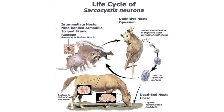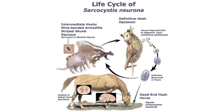The intermediate hosts are the nine-banded armadillos, striped skunks, raccoons, etc., which carry sarcocysts in skeletal muscle. From them, the definitive host — the opossum — gets infected, and sexual reproduction of Sarcocystis neurona occurs in the digestive tract or intestinal epithelium of the opossum, which sheds infective sporocysts in feces. By ingesting contaminated feedstuff containing sporocysts, horses get infected. Horses are the dead-end host, and lesions are formed in the spinal cord and brain.